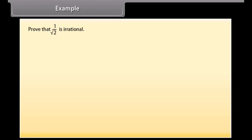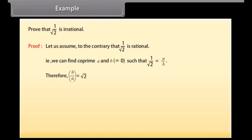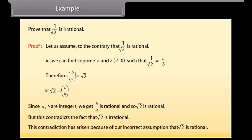Example: Prove that 1/√2 is irrational. Assume to the contrary that 1/√2 is rational — that is, we can find co-prime a and b, where b ≠ 0, such that 1/√2 = a/b. Therefore b/a = √2, meaning √2 = b/a. Since a and b are integers, b/a is rational, and so √2 would be rational. But this contradicts the fact that √2 is irrational. This contradiction arose because of our incorrect assumption.